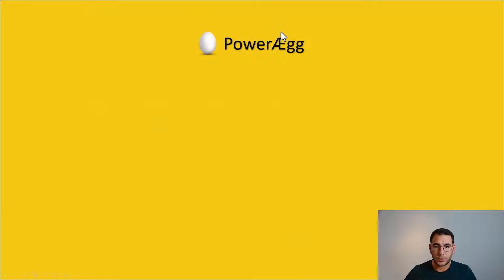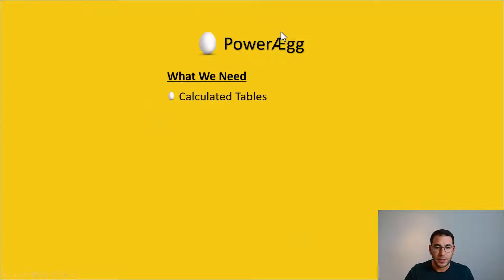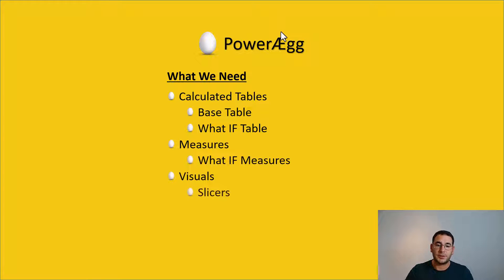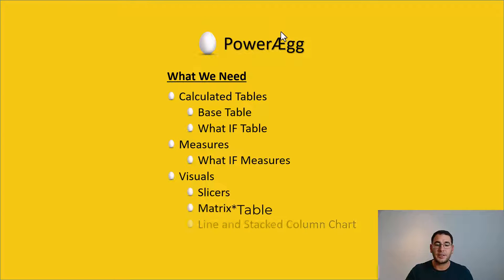Let's have a look at what we need. These would be our calculated tables — the base table and the what-if table. Then we have our measures, the what-if measures. Then we have our visuals: the slicers, the matrix, and finally the line and stacked column chart.